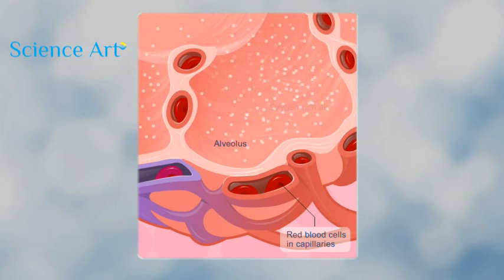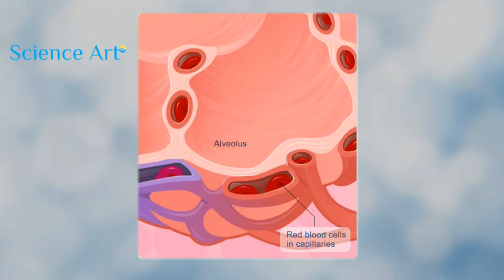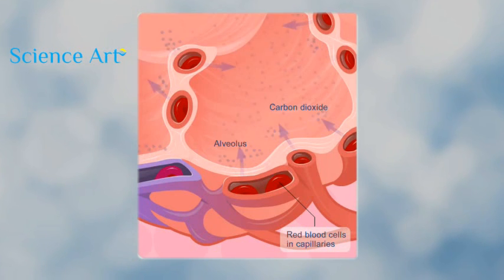During gas exchange, oxygen from the air in the alveoli passes into the red blood cells in the capillaries. The blood becomes oxygen rich. At the same time, carbon dioxide, a waste product carried in the blood and red blood cells, moves into the alveoli.